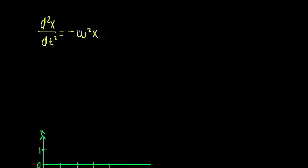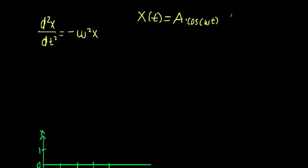Welcome back. Up till now we've been working with this one differential equation: the second derivative of x with respect to time is equal to negative omega squared times x. All this time we've just been using the general solution which has the form x of t is equal to A times cosine omega t plus B times sine omega t.